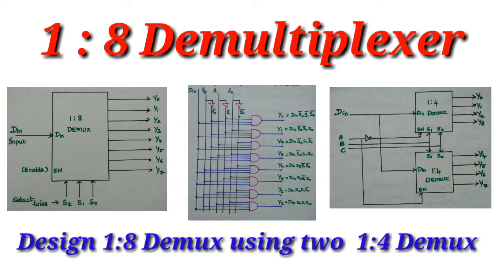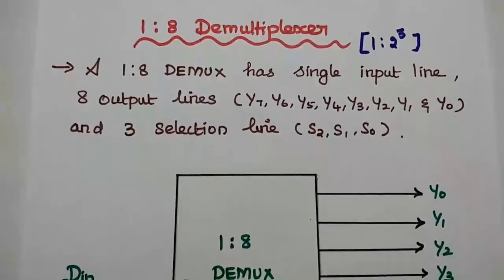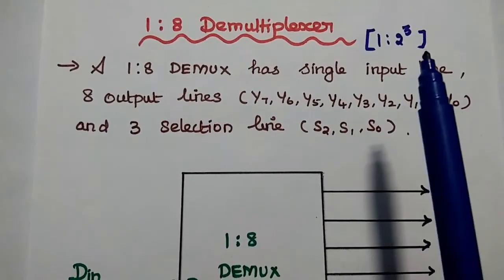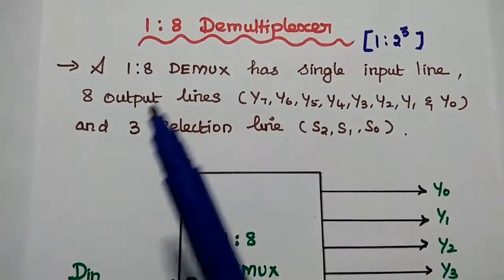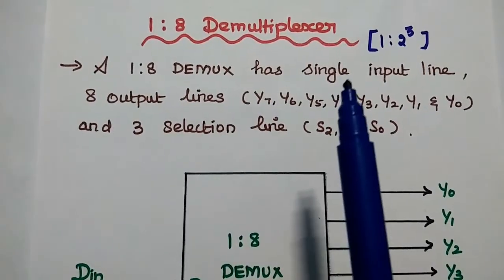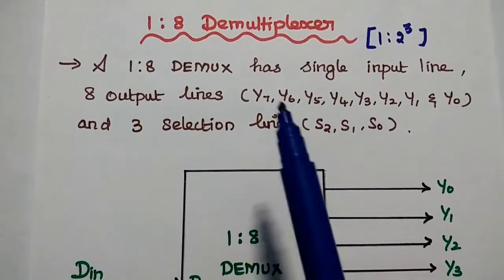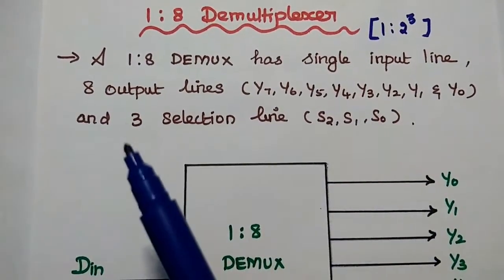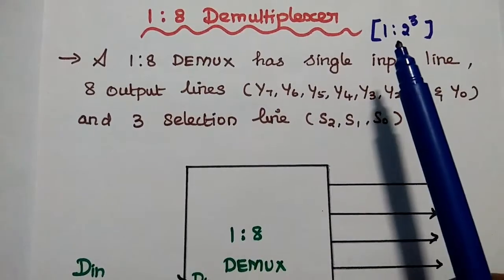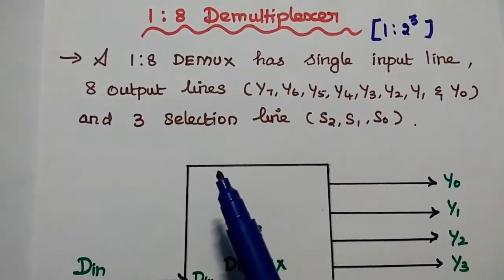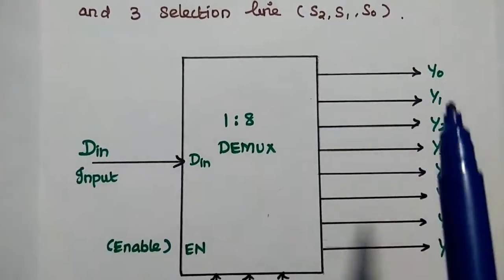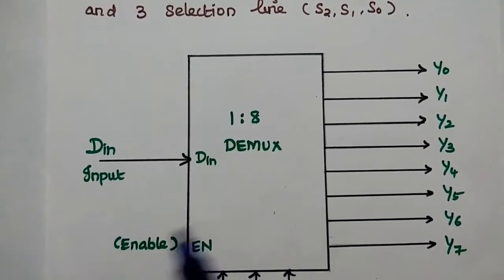Dear students, now we are going to discuss 1-to-8 demultiplexer in detail. It is also known as 1-to-2³ demux. A 1-to-8 demux has a single input line and 8 output lines. The output lines are represented as Y, and there are 3 selection lines. Since 8 is 2³, we need 3 selection lines to select the specific output out of the 8 possible output lines.